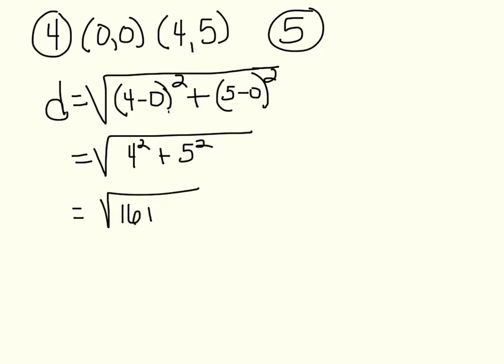4 squared is 16. 5 squared is 25. That gives us the square root of 41. And 41 is going to be, we're going to round to the nearest tenth, so it would be approximately 6.4.